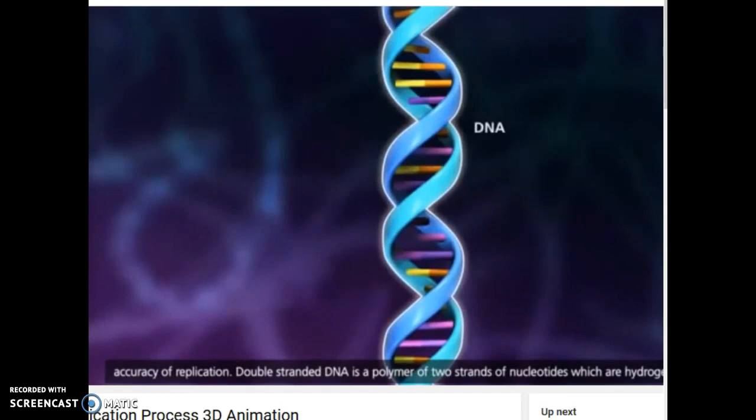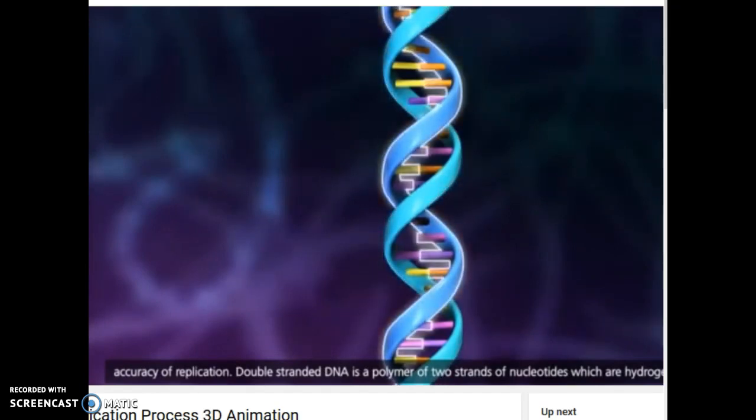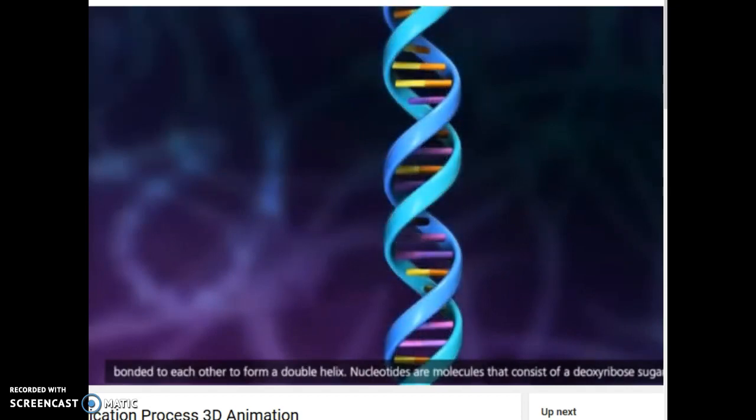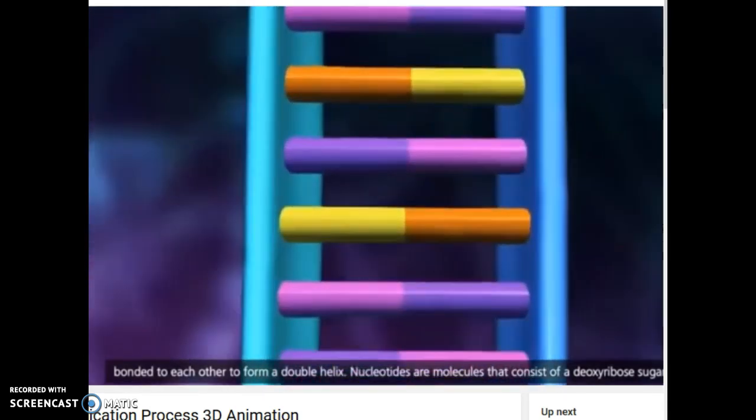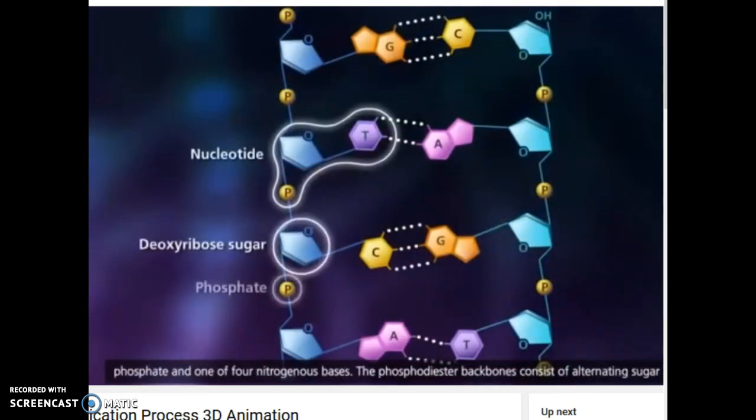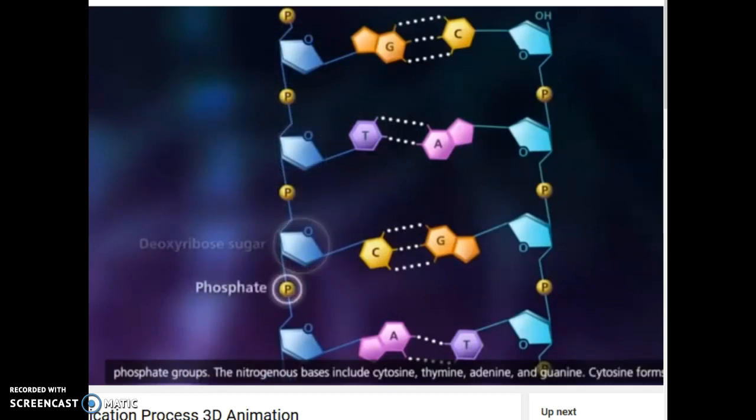Double-stranded DNA is a polymer of two strands of nucleotides, which are hydrogen-bonded to each other to form a double helix. Nucleotides are molecules that consist of a deoxyribose sugar, a phosphate, and one of four nitrogenous bases. The phosphodiester backbones consist of alternating sugar and phosphate groups.